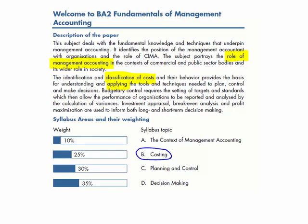The information gathered when identifying the cost of producing an item or providing a service is then used in a number of other business areas and roles of the management accountant. We can use that information firstly when it comes to planning. Planning here specifically focuses on the preparation of budgets — bringing together information and preparing a plan of action. Once we have got this plan of action, it allows us to set a target and then analyse our performance and make future decisions.